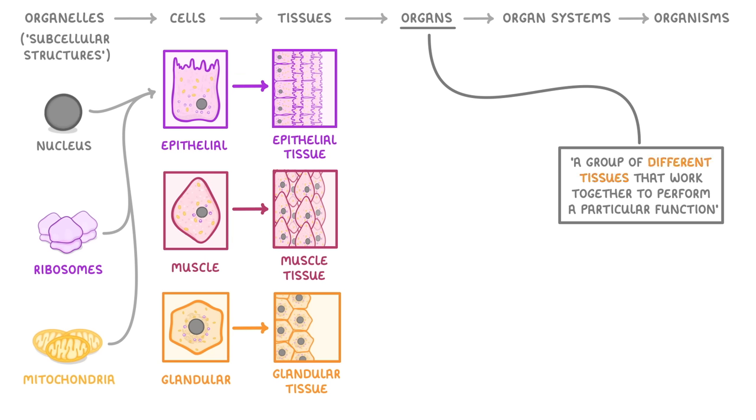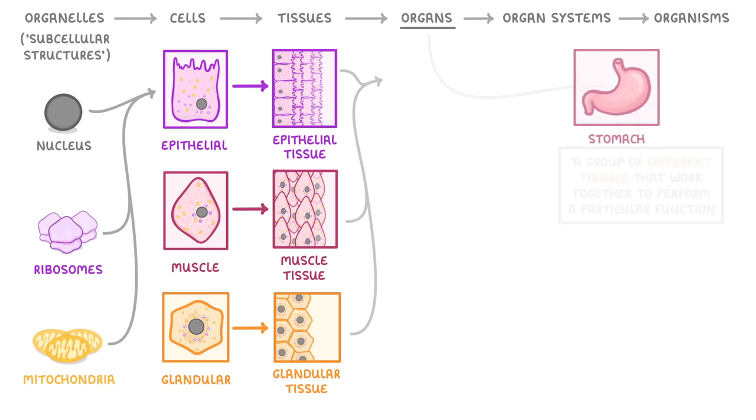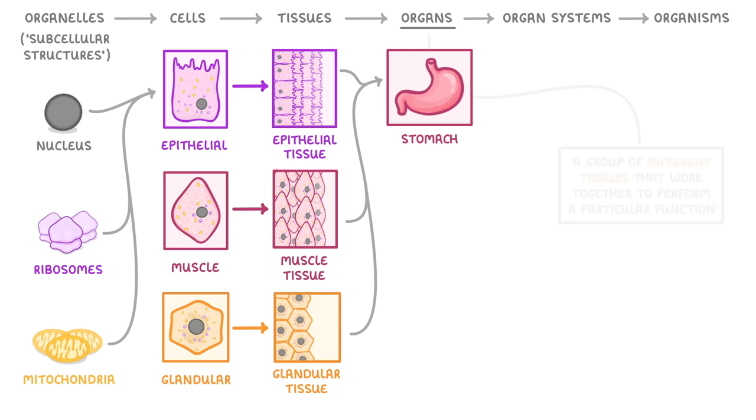So epithelial tissue, muscular tissue, and glandular tissue may all work together to form an organ like the stomach, which in this case has the particular function of killing microorganisms and breaking down proteins. Meanwhile, different combinations of tissues might form other organs like the pancreas or the liver.